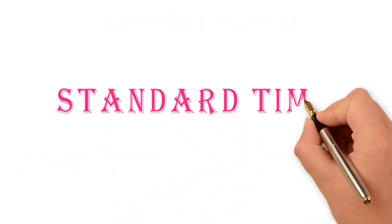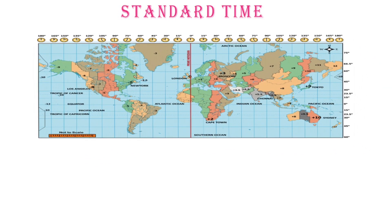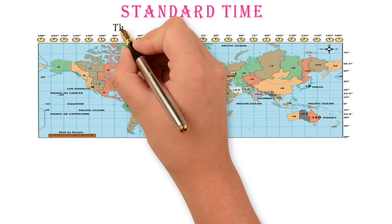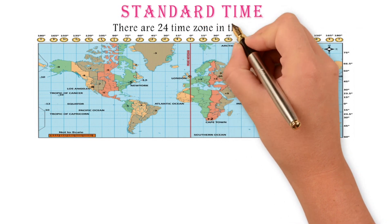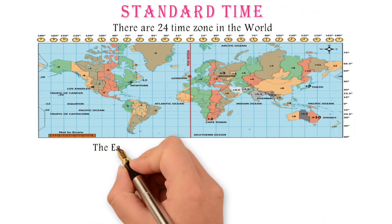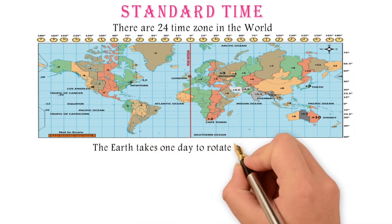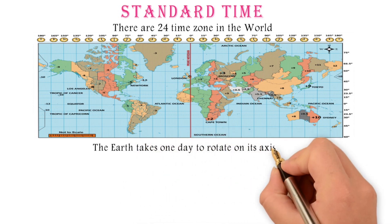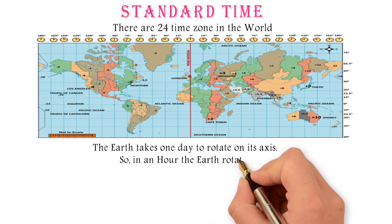Standard Time. There are 24 time zones in the world. The Earth takes one day to rotate on its axis, so in one hour the Earth rotates 15 degrees.